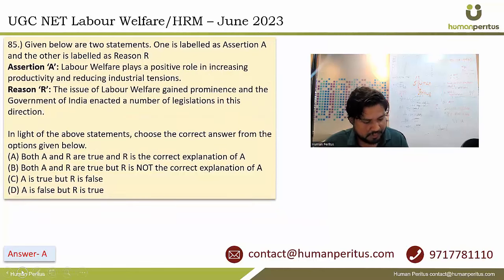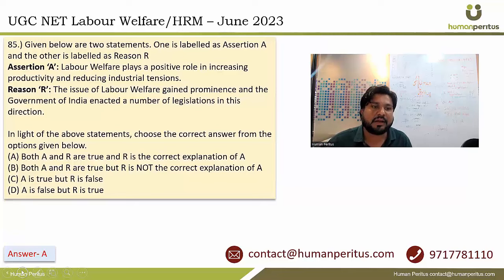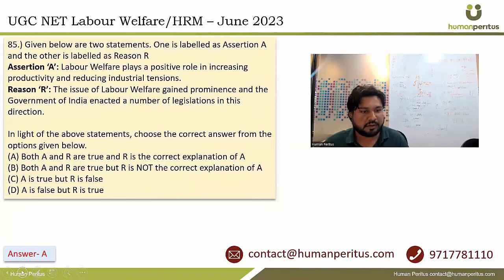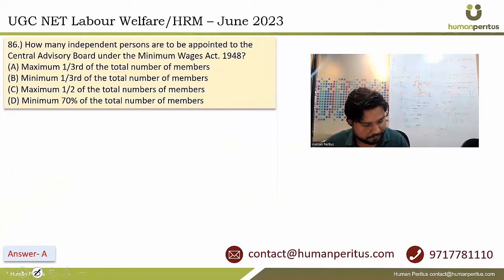Labor welfare plays a positive role in increasing productivity and reducing industrial tensions — this is absolutely correct. The reason also explains it well. So the correct answer is both A and R are correct and R is the correct explanation of A.